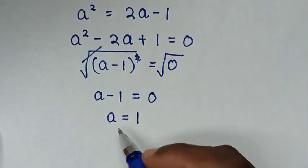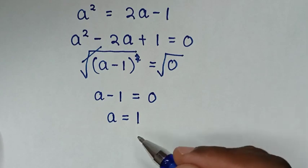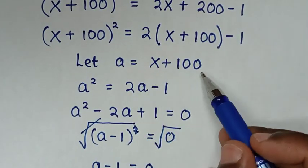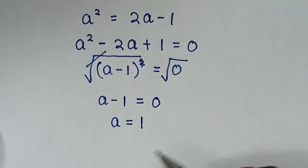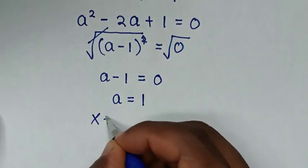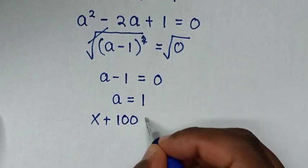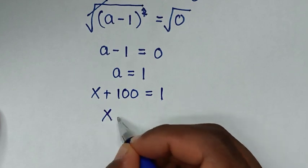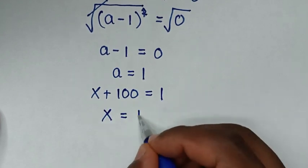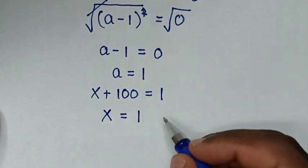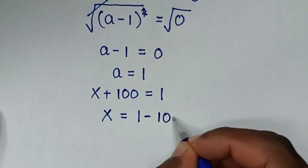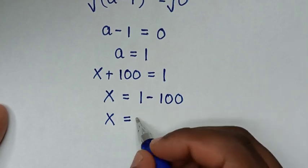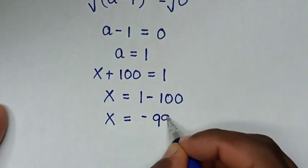But in our problem we are supposed to find the value of x. Since we let a = x + 100, substituting gives x + 100 = 1. Taking 100 to the right side gives x = 1 - 100 = -99.